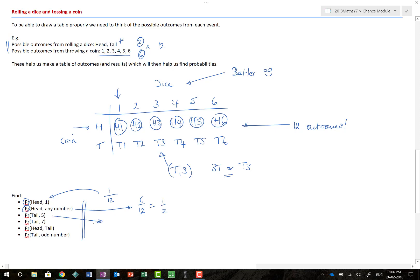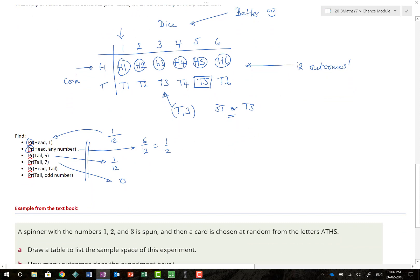What about the probability of getting a tail and a five? Well, there's only one of those. Again, one out of 12 outcomes. A tail and a seven. Because there is no number seven on our dice, there is absolutely no chance of having this at all. Which means it is a probability of zero. What about getting the probability of a head and a tail? Again, that probability is going to be zero. Why? Because we're not throwing two coins. We're throwing a dice and a coin. And then finally, what is the probability of getting a tail and an odd number? So now we're going to look for all the tail and odd numbers. There is one, two, and three. So that's three out of 12, which is one out of four. So there's a quarter chance.